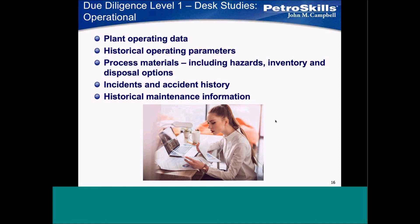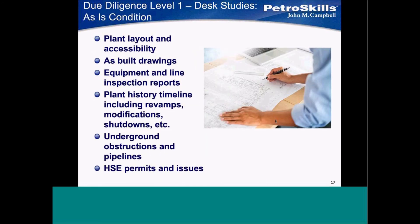Incident and accident history: if you're working in an area of the plant where there have been numerous events, that should tell you something. And the historical maintenance information — how has the unit been maintained? That gives you an idea of what you're going to find when you open it up. Also, inspection reports — what do they look like over the last five years? Has the vessel wall been thinning continuously? That would show you a trend. The idea is to gain as much intelligence about the unit you're going to work on before you ever do your design.